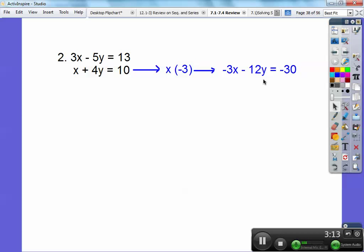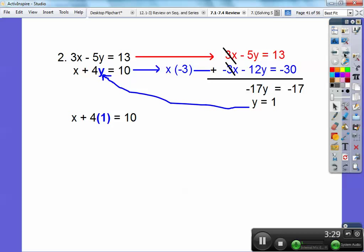Now I'm just going to slide that top equation straight over. Now I can add them up. I get negative 17y. 13 plus negative 30 is negative 17. So I get negative 17y equals negative 17. So y equals 1. Probably easiest to plug it in right there. So subtract 4, you get x equals 6. Of course, 6 comes first. 6 comma 1.